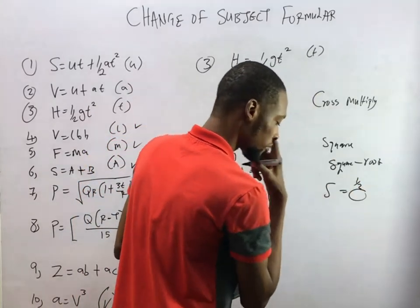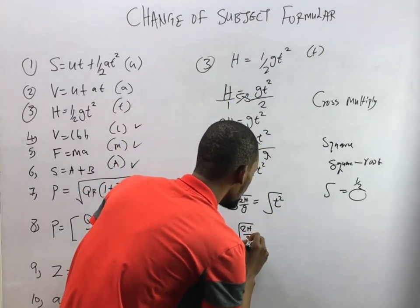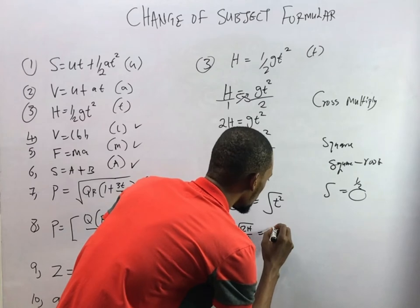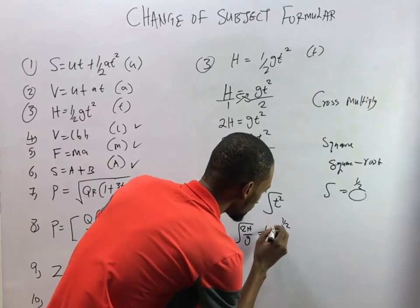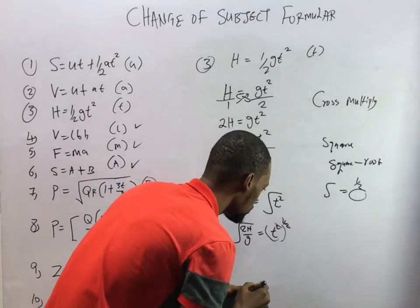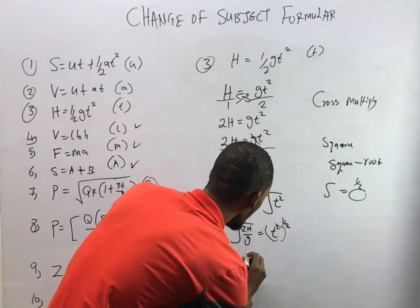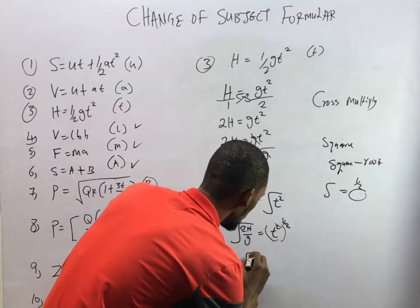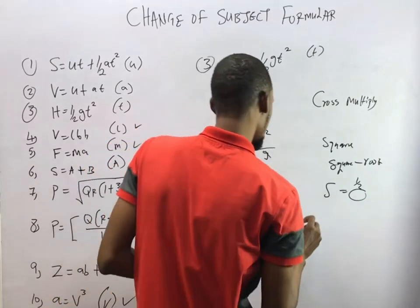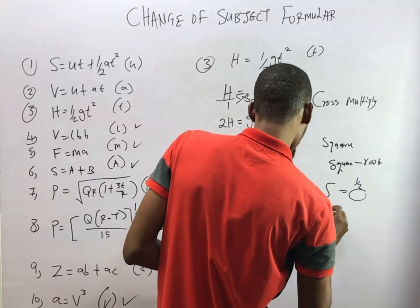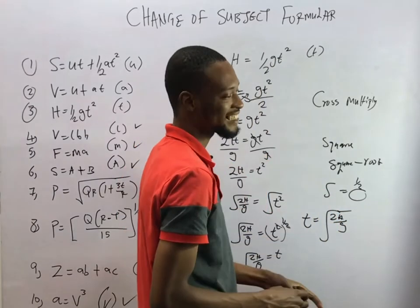Therefore the square root of 2H over G equals T, so T equals the square root of 2H over G. That is the answer.